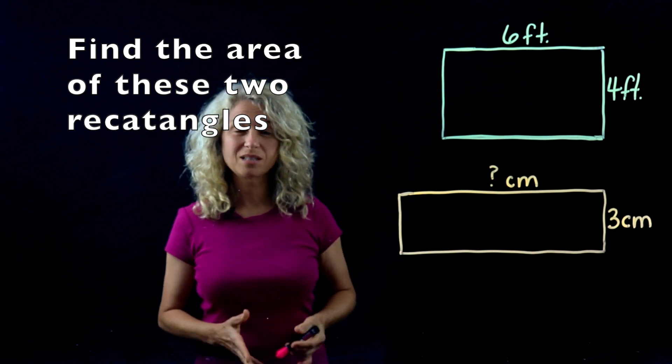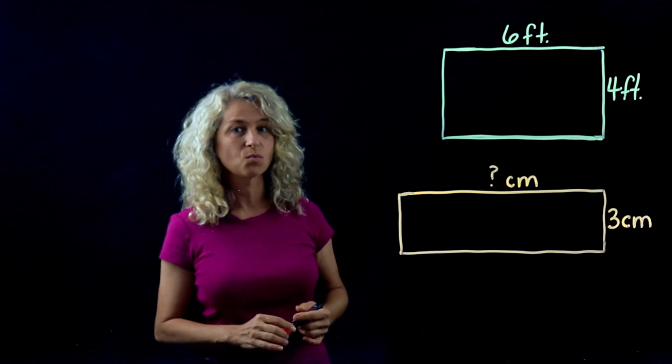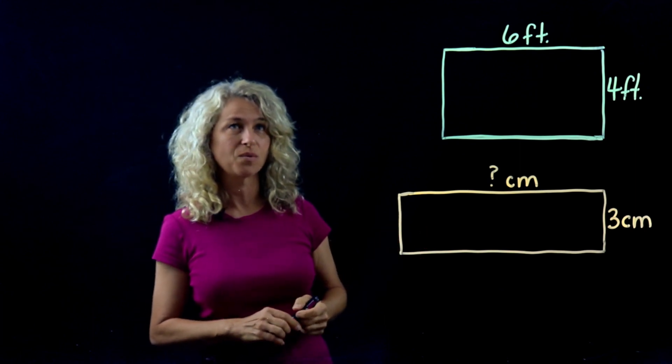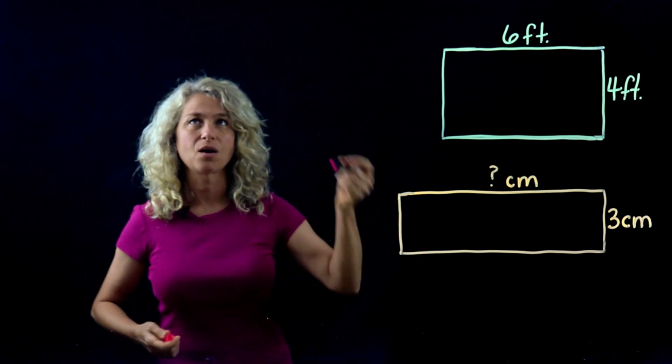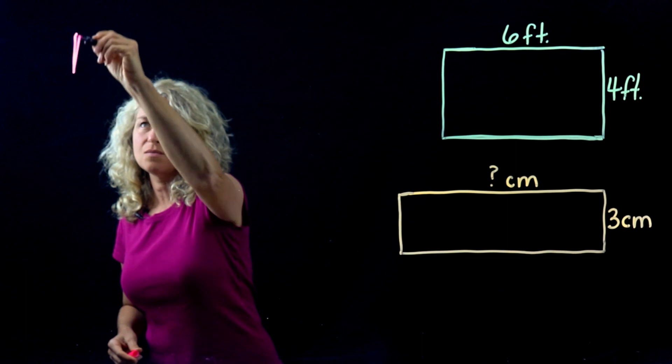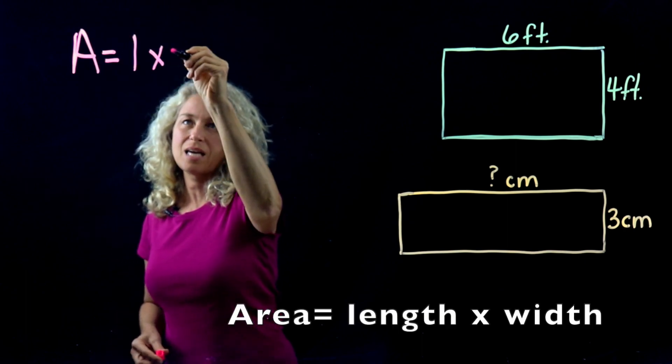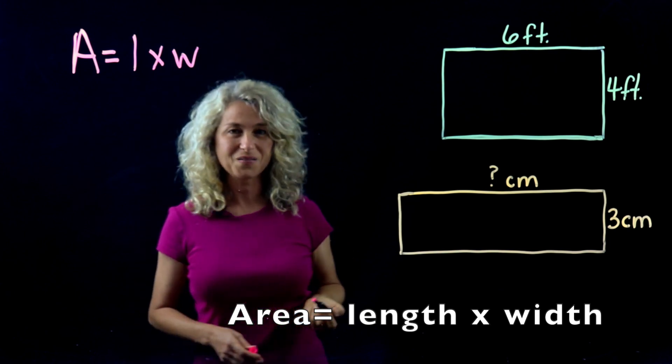Hello, today we're going to learn about finding the area of a rectangle. We're going to look at these two examples to start with. Before we begin though, let's remind ourselves that area equals length times the width.